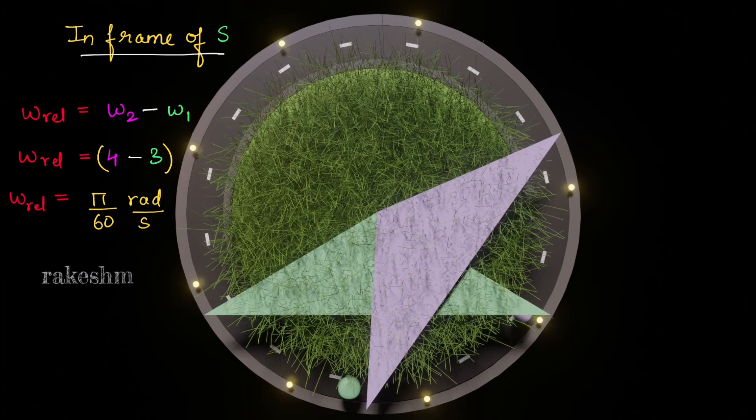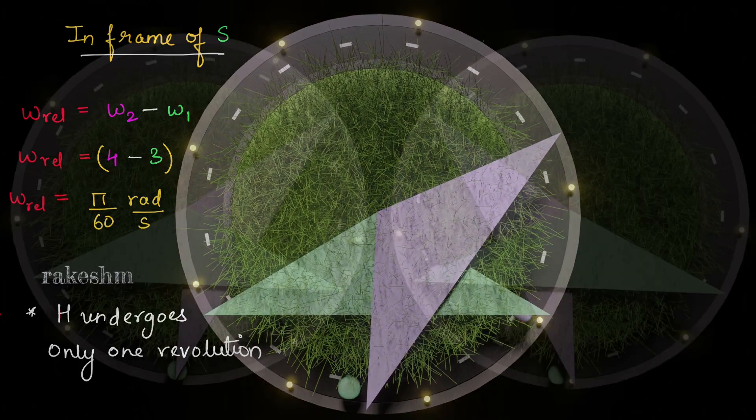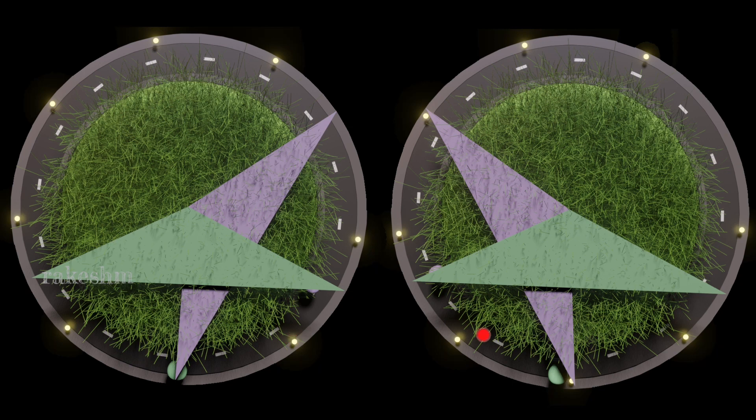So we can say that omega relative is pi by 60 radians per second. One more important point is in the frame of S, H undergoes only one revolution. So if this person is at rest, the H will undergo only one revolution.